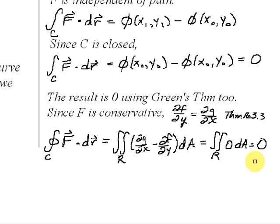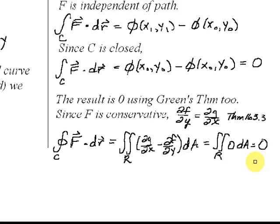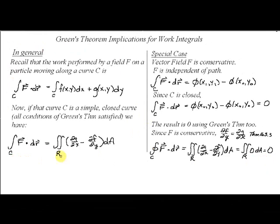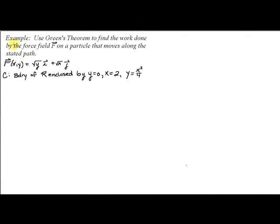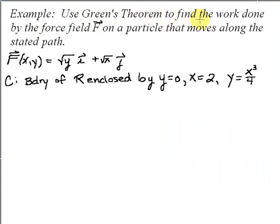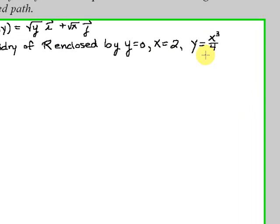In the next example, we're going to look at a more general case where we don't end up with zero in the integrand, because we're not looking at a conservative vector field. We're asked to use Green's theorem to find the work done by the force field F on a particle that moves along the stated path. The force field is F(x,y) = √y i + √x j. The curve C is the boundary of the region R enclosed by y = 0, x = 2, and y = x³/4.